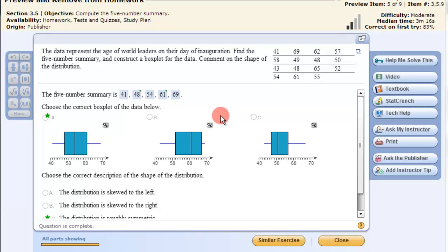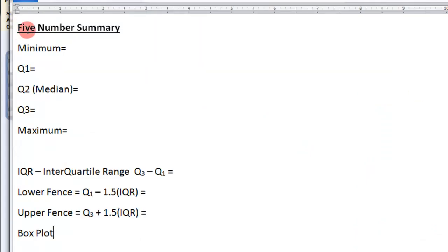In this video we're going to use the TI-83-84 calculator to find out the following: the five number summary, which includes the minimum, quartile 1, quartile 2 which is the median, quartile 3, and the maximum.